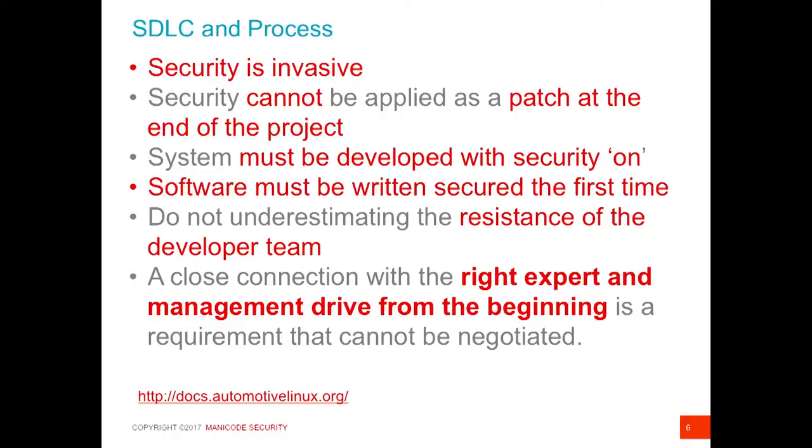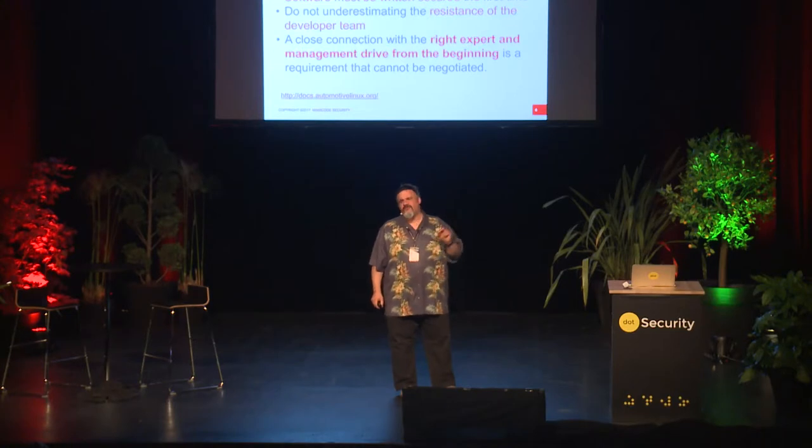Number two: we can't just patch our software at the end of a project and get good security. We need something built in from day one. Gary McGraw, one of the forefathers of our industry in application security, talks about building security in — not just adding it as a feature at the end, but making it an integral part of the software we're building. We want to get secure software written right the first time, from the ground up as part of our core features, not addressed later, but from the early phases of the software development life cycle.